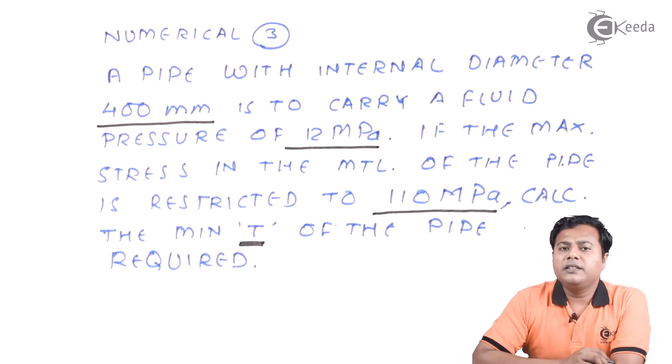So guys, here in this case, they have not specified the external diameter. Instead, they have asked for the minimum thickness that is safe. So this is the kind of problem where we need to design the dimensions of the pipe, the missing dimension, which is the thickness in our case.